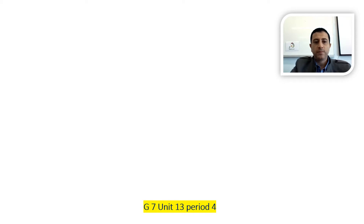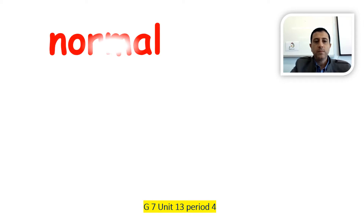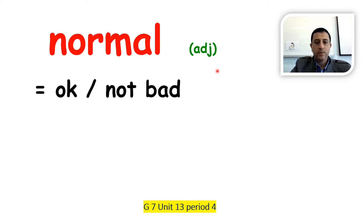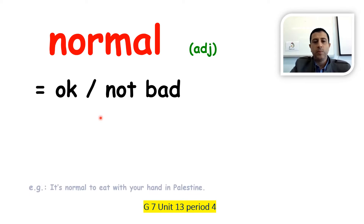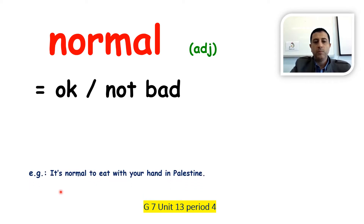The next word is 'normal.' Normal is an adjective. Normal means okay or not bad. An example: It is normal to eat with your hand in Palestine — so it's okay, it is not bad to eat with your hand in Palestine.